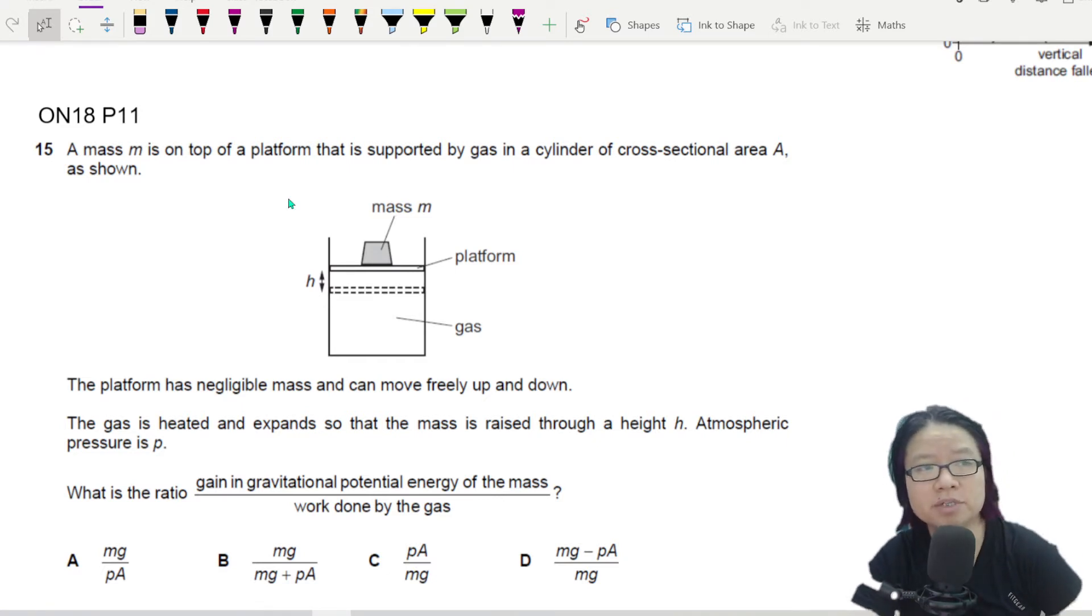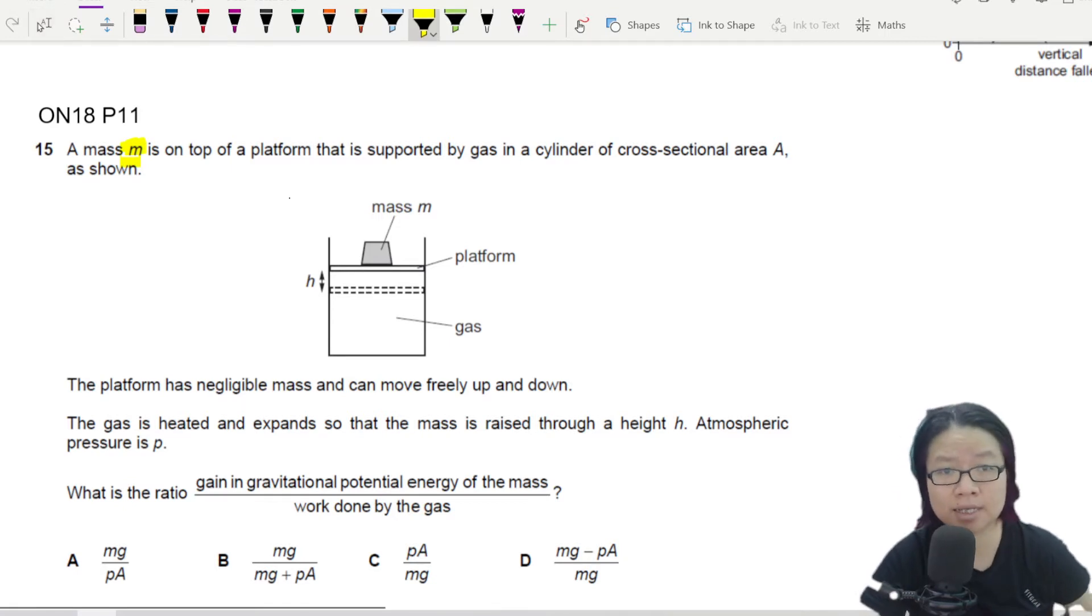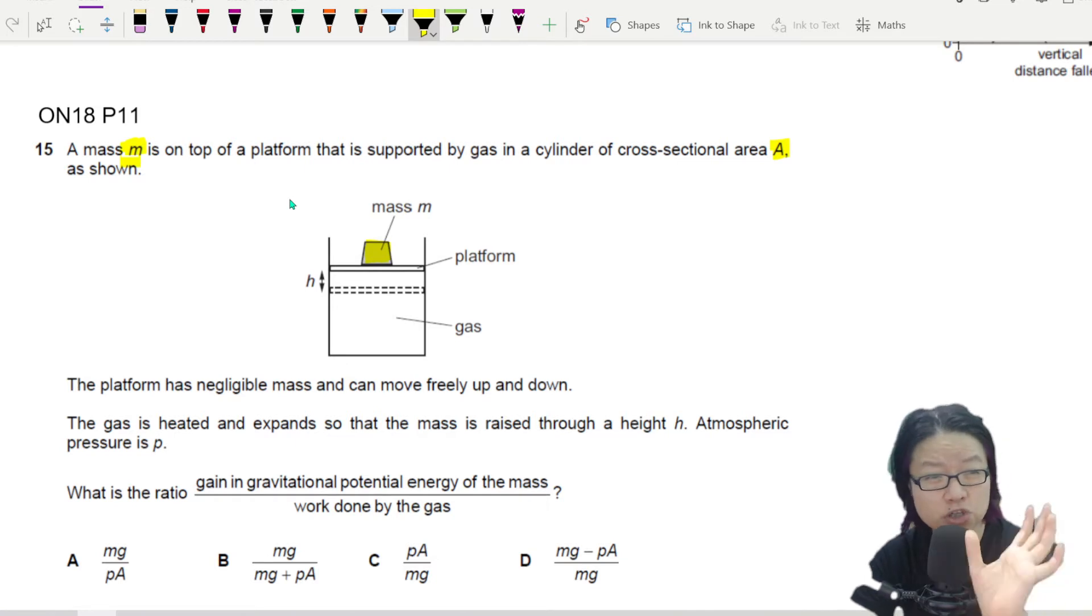Here this scenario is a bit different. We are going to put a mass m on top of a platform that is supported by gas in the cylinder of cross-sectional area A. So there is this slotted mass here that the gas is pushing up against.